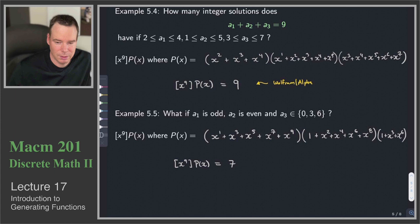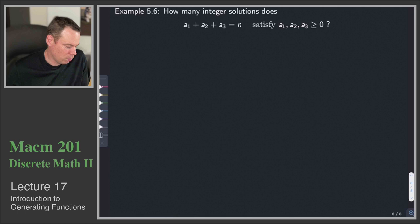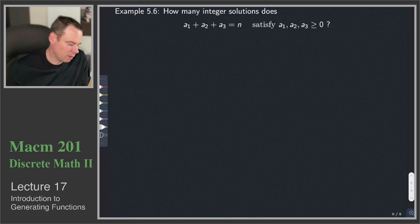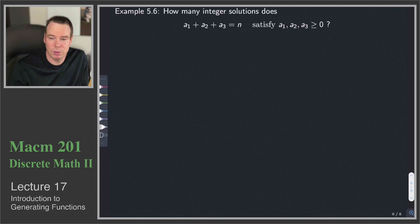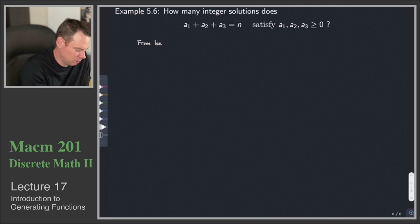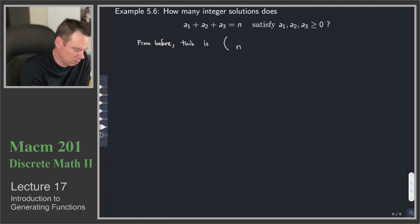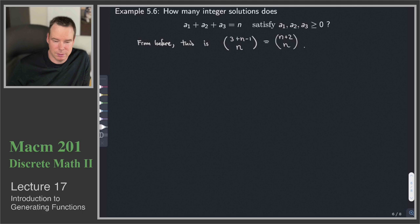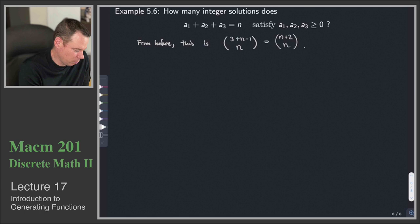Let's look at a general case: how many integer solutions does a1 + a2 + a3 = n have, where each aᵢ ≥ 0? We already know the answer from before — this is choosing n from 3 with repetition, which equals (n+2) choose n. But we can also look at this from the perspective of generating functions.